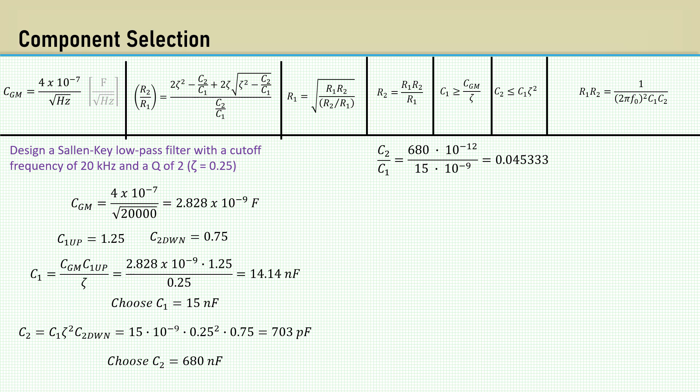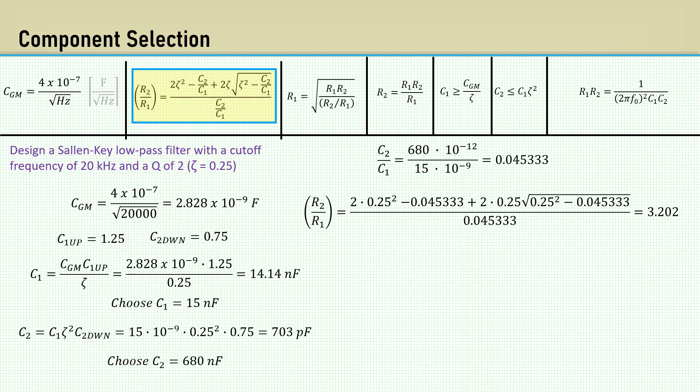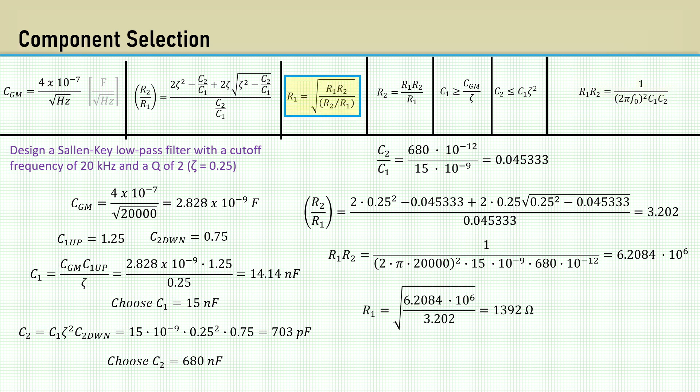The resistors will be calculated to compensate for the off-target C2 to C1 ratio. Now using our nifty equation for the ratio of R2 to R1, we get 3.202. Now that we know the selected standard capacitor values, we can calculate the product of R1 and R2. Then R1 comes out to 1,392 ohms. The closest E96 1% value is 1,400 ohms. R2 comes out to 4,435 ohms. And the closest E96 1% value is 4,420 ohms.